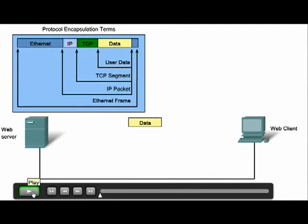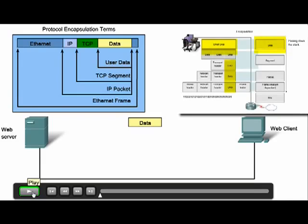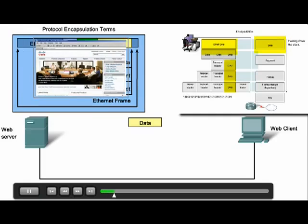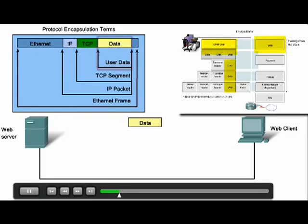When sending messages on a network, the protocol stack on a host operates from top to bottom. In this web server example, we can use the TCP/IP model to simulate the process of this web server sending a message to the web client. First, the application layer protocol, HTTP, begins the process by sending the data to the transport layer.